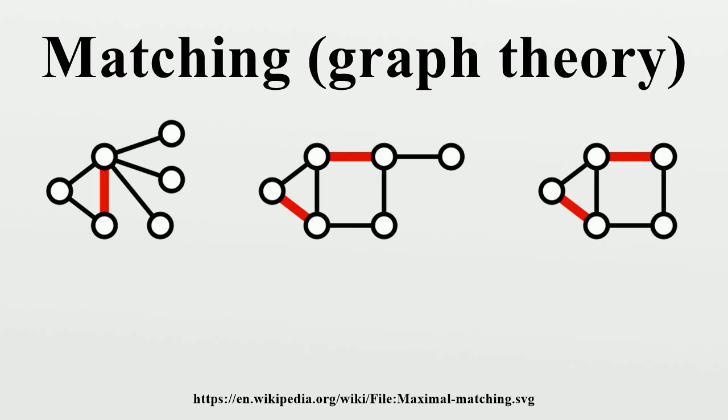A perfect matching is a matching which matches all vertices of the graph. That is, every vertex of the graph is incident to exactly one edge of the matching. The figure above is an example of a perfect matching. Every perfect matching is maximum and hence maximal.